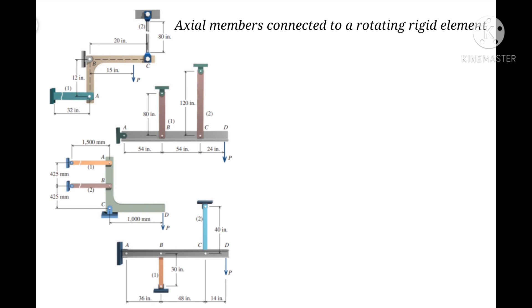The third case involves axial members connected to a rotating rigid element. Problems in this category feature a rigid bar or rigid plate to which the axial members are attached. The rigid element is pinned so that it rotates about a fixed point. Since the axial members are attached to the rotating element, their deformations are constrained by the position of the deflected rigid bar.